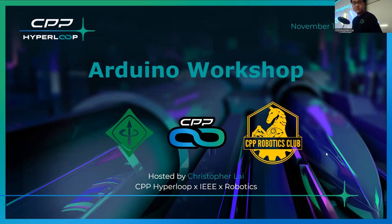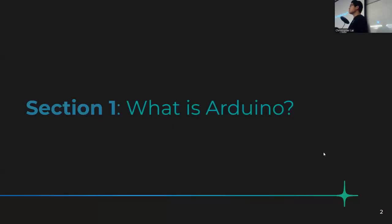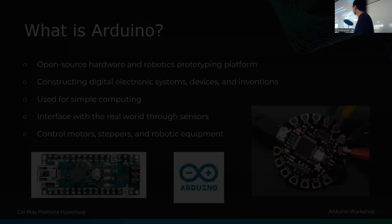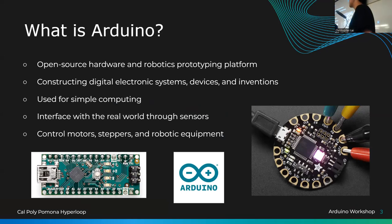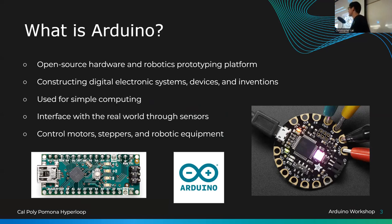Section one: what is Arduino? Arduino is open source hardware — it's a development board that hobbyists use to build low-scale electronics really easily. It's also modular and flexible. You can construct digital electronic systems, devices and inventions like a voice-controlled sink, an RC car, or a hyperloop pod. Any sort of electronics at a scale where you don't have too much going on, you can use an Arduino.